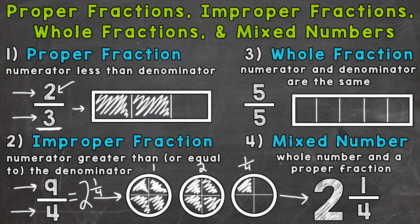Lastly, since we went out of order, we're moving to number three: whole fractions. These are fractions that represent one whole, and that's when the numerator and denominator are the same. Looking back at improper fractions, where the numerator is greater than or equal to the denominator, technically a whole fraction is a specific type of improper fraction — but we can think of it as its own category.